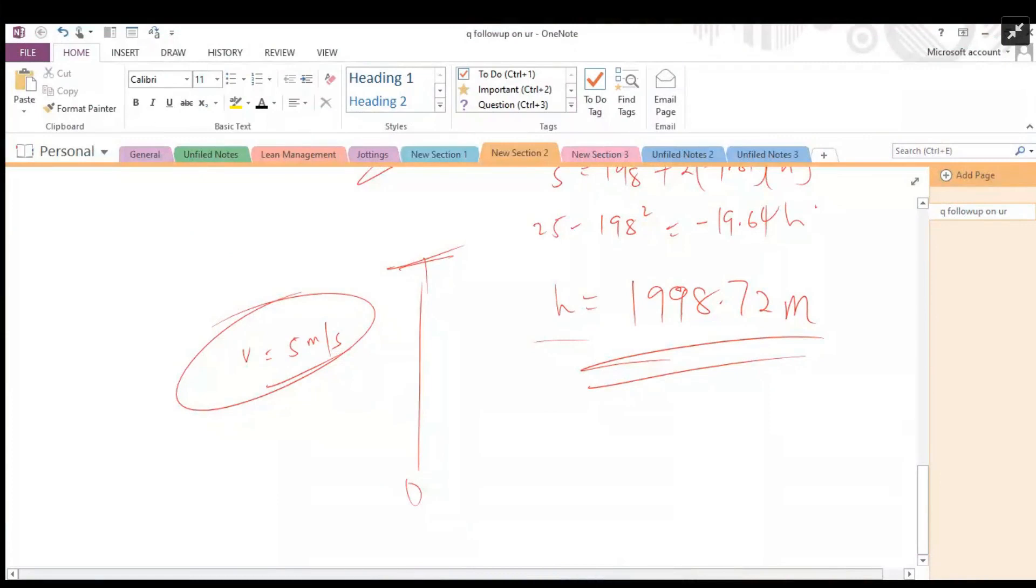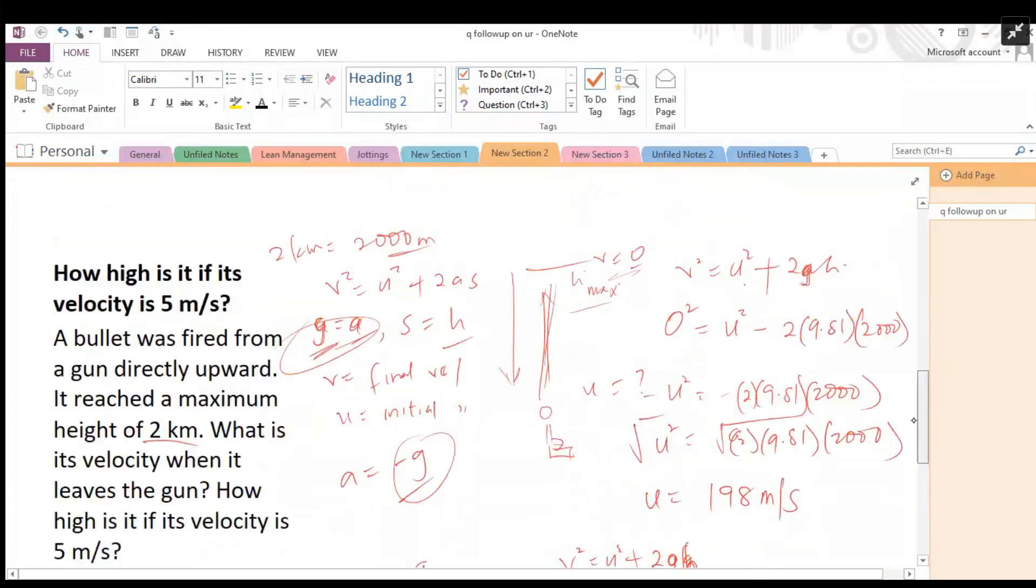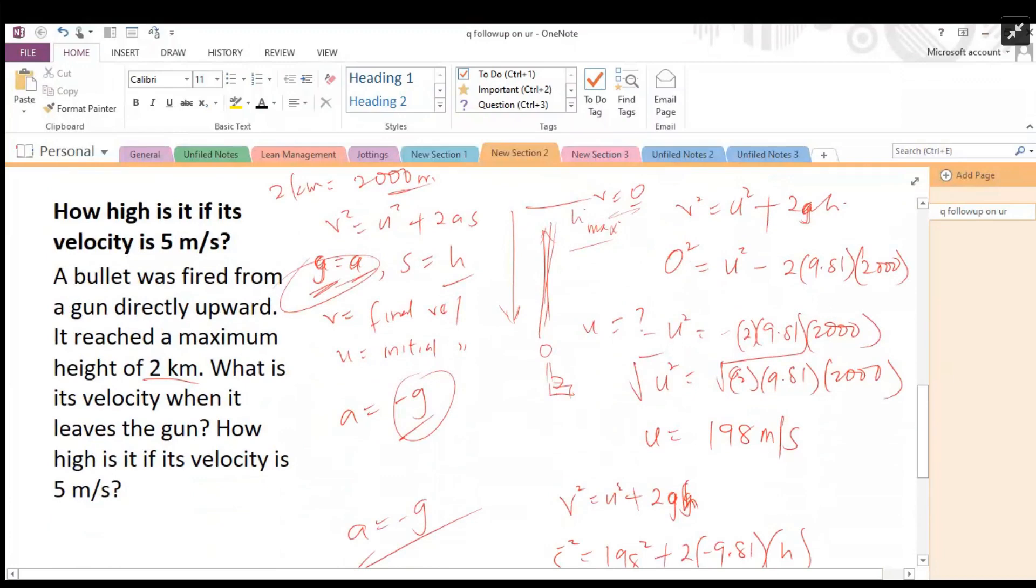Alright, so we're going to go over the question. How high is it? A bullet was fired from a gun directly upward. It reached a maximum height of two kilometers. What is its velocity when it leaves the gun?